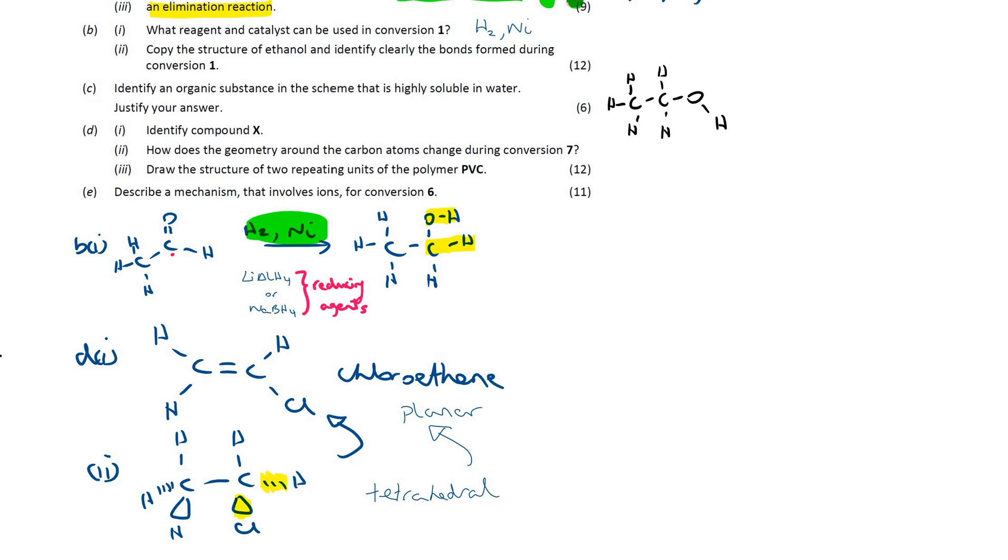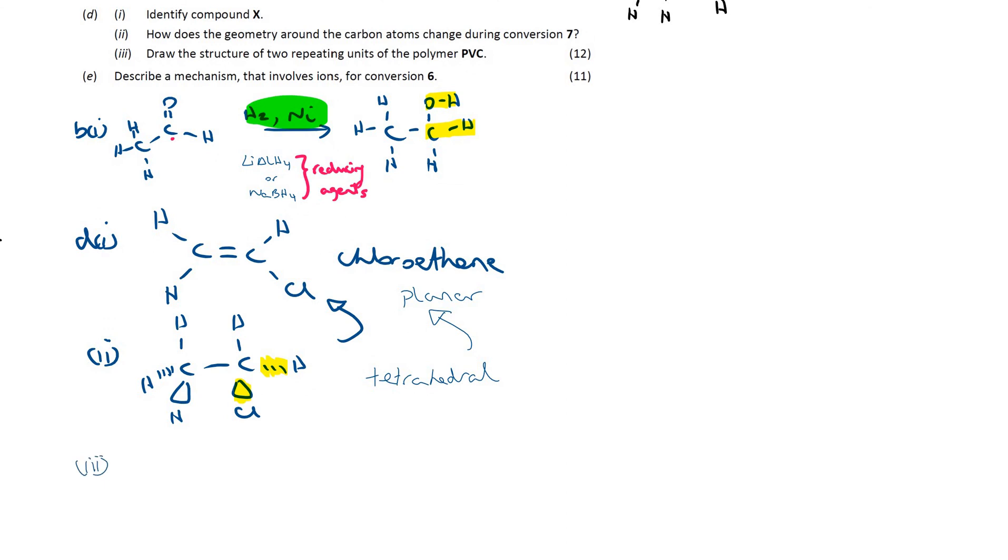Draw the structure of two repeating units of the polymer PVC. Whenever a polymer is formed, you don't have to write this out, but you're forming it from the monomer. What happens is, the double bond breaks, and it essentially adds on to another molecule of itself. So, another chloroethene molecule.